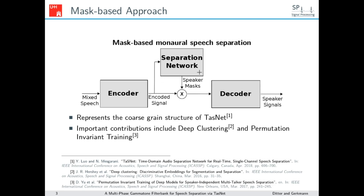The separation network outputs a mask for each speaker. This mask is multiplied element-wise with the encoded signal for each speaker, giving us an encoded signal estimate per speaker. This estimate is then fed into the decoder — for deep clustering and permutation invariant training this would often be the inverse STFT, while for TASNET this would be a real-valued filter bank again. The output of the decoder gives us the signals for each speaker in the time domain.